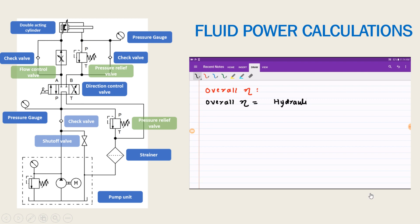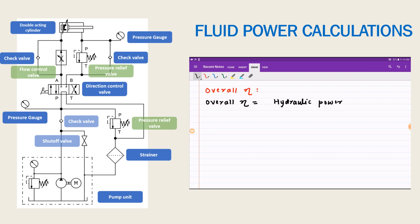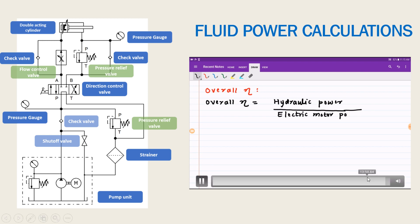Finally, overall efficiency is the ratio of output to input. Output is the hydraulic power and input is the electric power generated by the motor. The motor supplies power to the pump, so overall efficiency equals pump hydraulic power divided by electric motor power. In this way we can find out the fluid power in hydraulics and pneumatics.